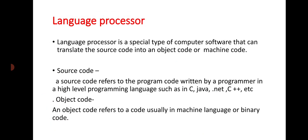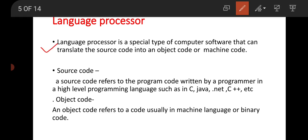Now we move to the language processor. Language processors are a special type of computer software that can translate source code into object code or machine code. Language processor is also called a language translator. Since computers can only understand binary code — the language of 0s and 1s — we need a language translator to resolve the problem of converting our high-level instructions into a form the computer understands.